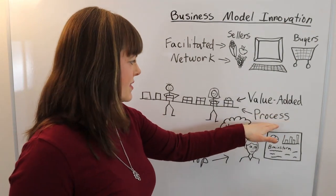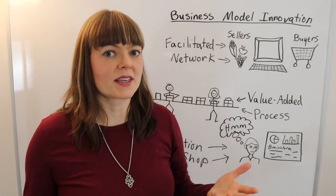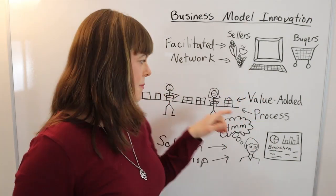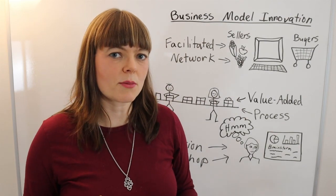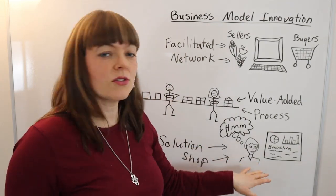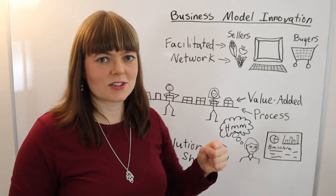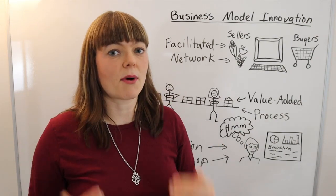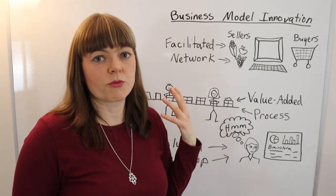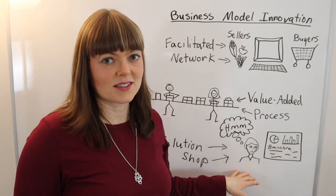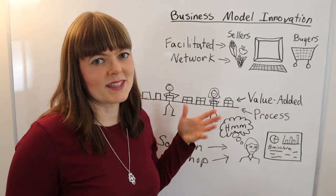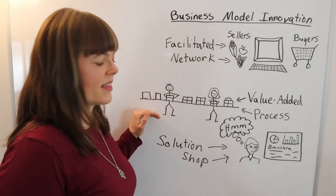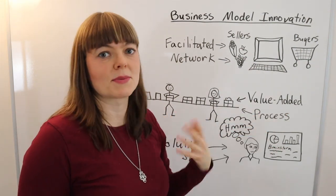A value-added process business is basically an assembly line. You go to the business to solve a problem, but the business has streamlined that solution so much that it no longer requires expertise — we know what the process is and we execute it as efficiently as possible. The value they're offering is really efficiency rather than expertise, achieved by taking past expertise and making it play out more efficiently. Think assembly line when you think about a value-added process business.